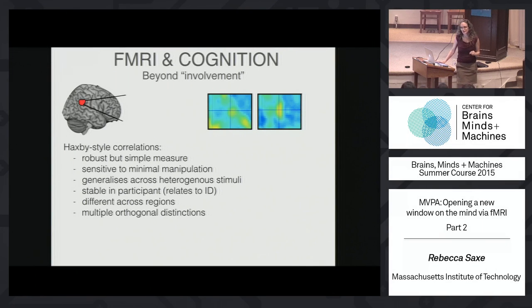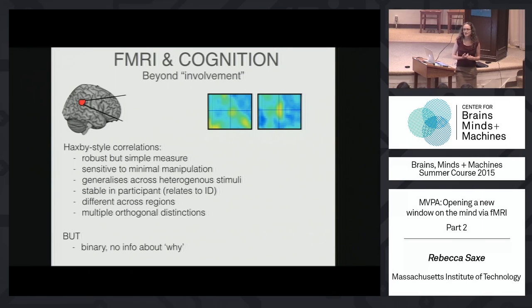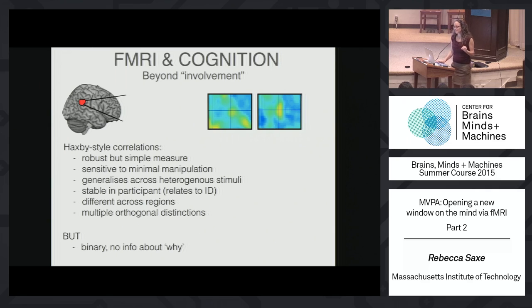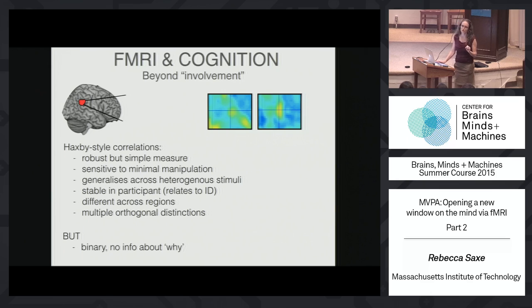There are a whole bunch of limitations of Haxby-style correlations. One of them is that all the tests are binary. The answer you get for anything you test is that there is or is not information about that distinction. There's no continuous measure — it's just that two things are different from one another, or they are not. This method using spatial correlations is very stable and robust, but it's a special case of a much more general set.